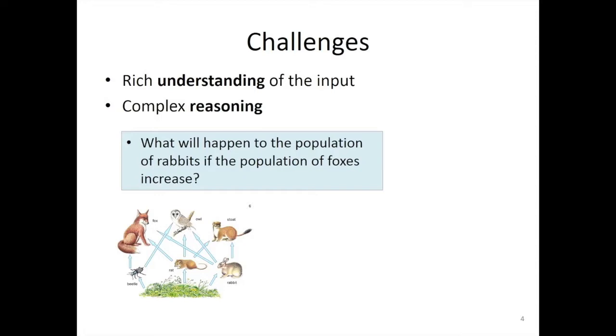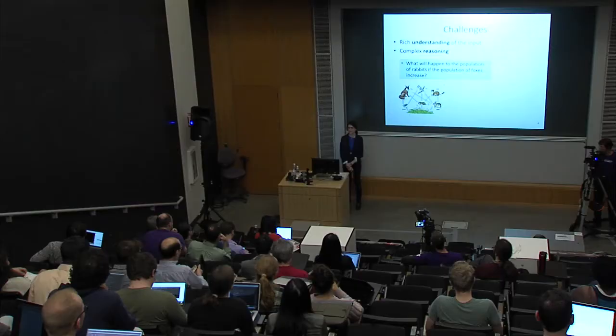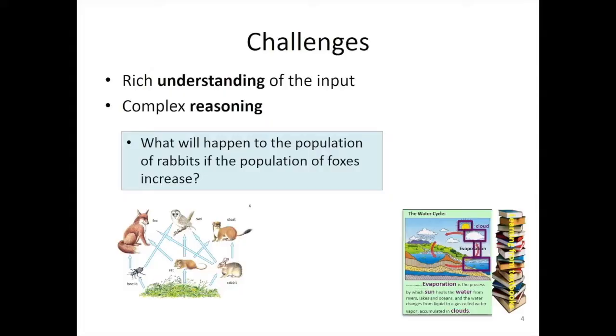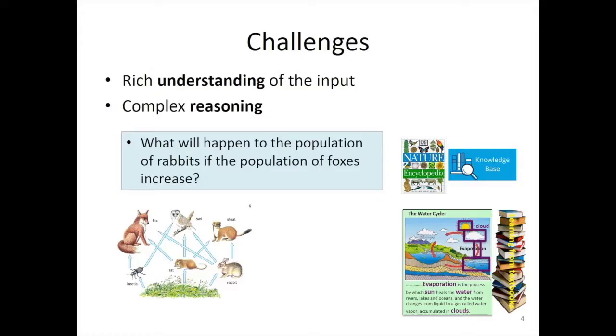Or consider this problem: what will happen to the population of rabbits if the population of foxes increases? A 10-year-old can answer by looking at a food web diagram, knowing that foxes consume rabbits. But for current AI systems, this is very difficult. The system not only needs to understand what's inside the diagram, but also needs to know what it means that rabbits are consumed by foxes — requiring complex reasoning over textbooks, encyclopedias, and Wikipedia pages.